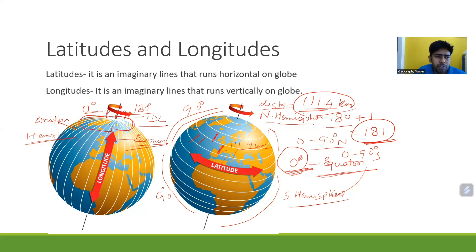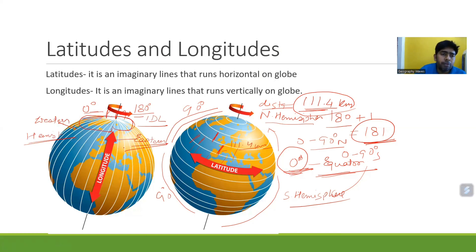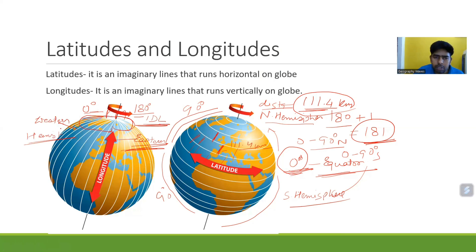If we cut the Earth vertically with the help of 0 degree prime meridian and 180 degree international date line, the half on the right side is considered the eastern hemisphere and the left side is considered the western hemisphere. The total number of longitudinal lines is 360.